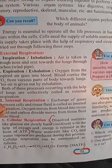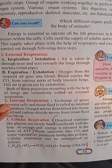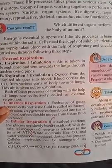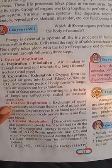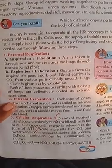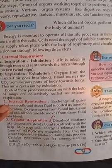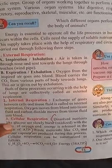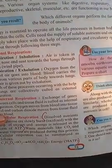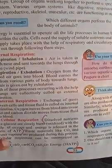In cellular respiration, dissolved nutrients like glucose are slowly oxidized with the help of oxygen, and energy is released in the form of ATP. ATP is a form of energy. When soluble nutrients and oxygen react, energy is released and ATP is formed. Waste products like carbon dioxide and water vapor are produced during this process.